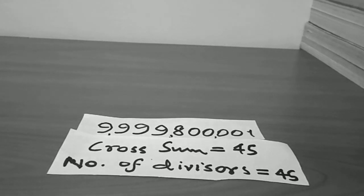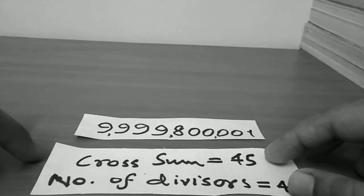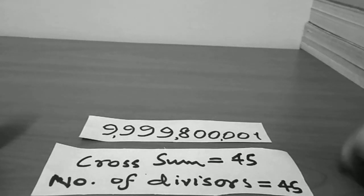The cross sum as well as the number of divisors is equal to 45, which is well cool, though not that magnificent, but still. So this was my shower number.